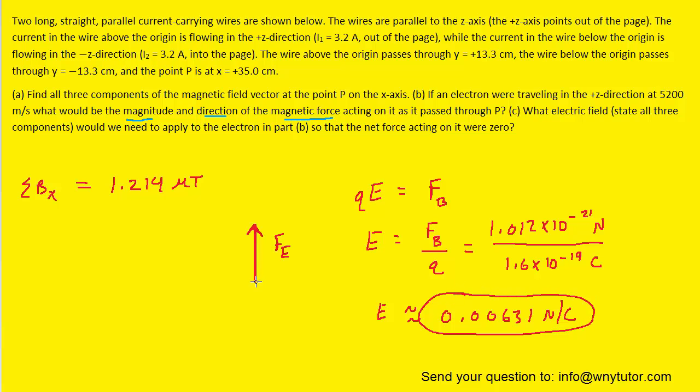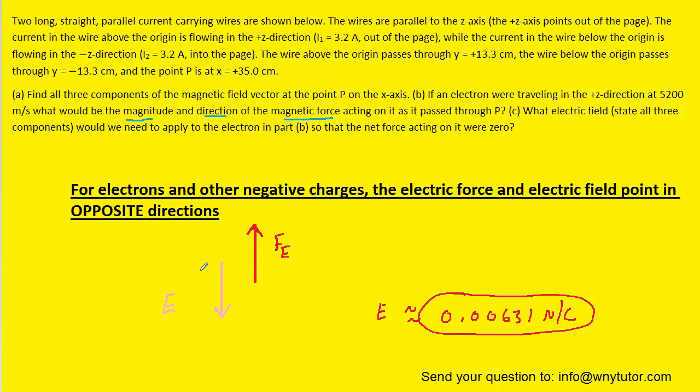Remember that the electric force was pointing up. That means the electric field has to be pointing in the opposite direction. Because for electrons, the electric force points in the direction opposite to the electric field. That's so important it's worth stating again: for electrons, as well as other negative charges, the electric force and the electric field will point in opposite directions. That means this electric field would be pointing in the negative y direction.